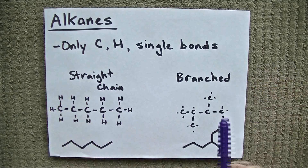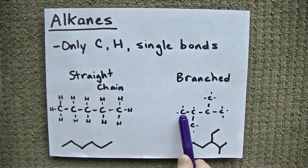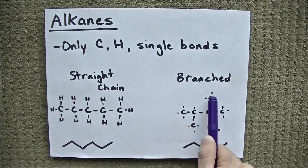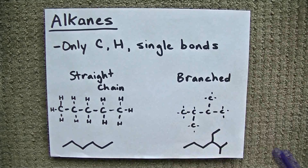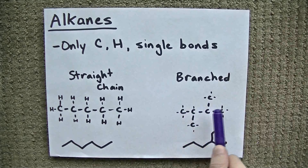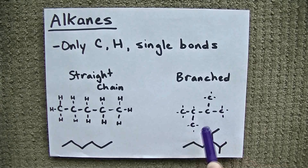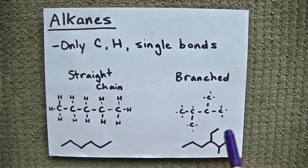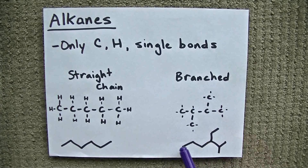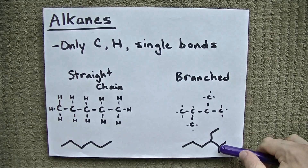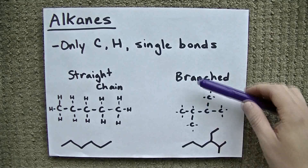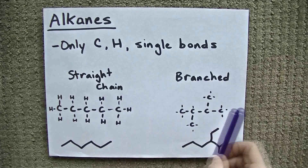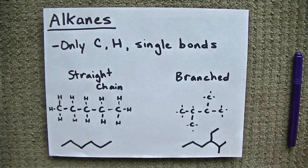As opposed to branched alkanes, where you might have a straight chain, but then you have some carbons coming off of it, or branching off of it like the branches of a tree. Here we have one, two, three, four carbons, but then we have one sticking off the second one, and one sticking off the third one — these are the branches. Here we have one, two, three, four, five, six carbons, then we have a one-carbon chain sticking off here, and a two-carbon chain sticking off here. These are called branched alkanes.